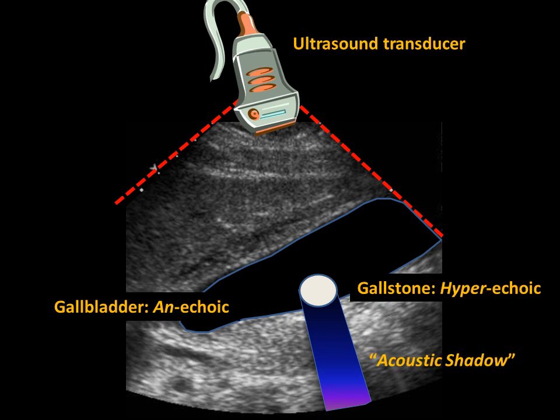Labeled on this image is the ultrasound transducer, the anechoic gallbladder, the hyperechoic gallstone, and the acoustic shadow.